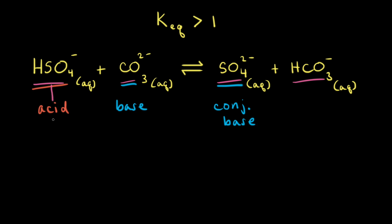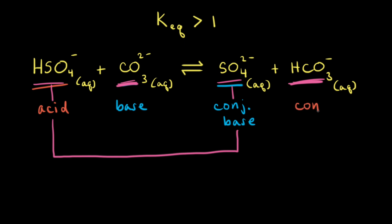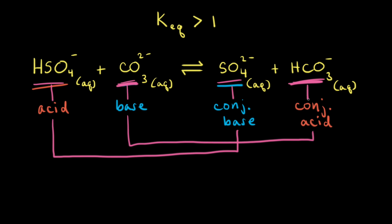So one conjugate acid-base pair is HSO4⁻ and SO4²⁻. And when the carbonate anion accepts a proton, it turns into the hydrogen carbonate anion. Therefore, the hydrogen carbonate anion must be the conjugate acid to the carbonate anion. So our other conjugate acid-base pair consists of the carbonate anion and the hydrogen carbonate anion.